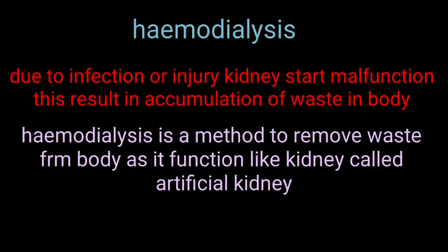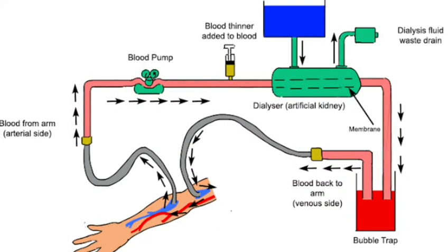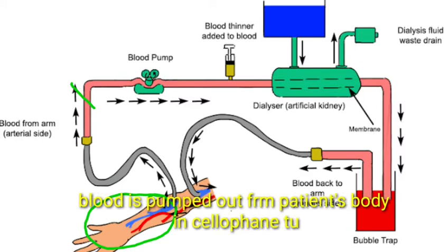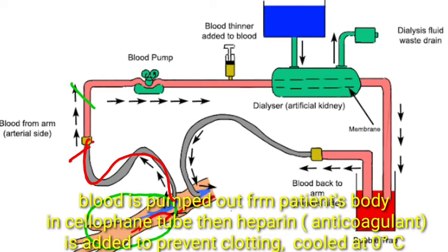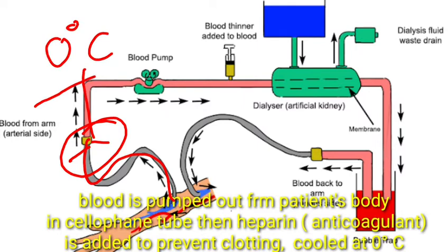Toh dialysis machine ya artificial kidney function kaise kerti hai? First of all, patient ki body se blood ko pump out kiya jata hai, and then isko cool kiya jata hai. Cool isliye karte hain kyunki humari body ka ek fixed temperature hota hai aur external temperature different ho sakta hai, so pahle blood ko cool kiya jata hai.